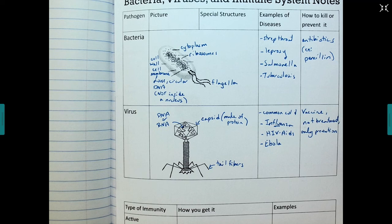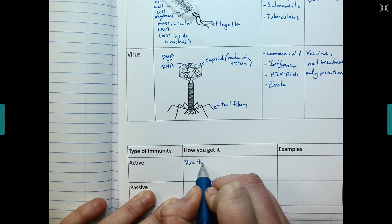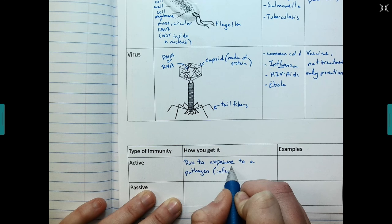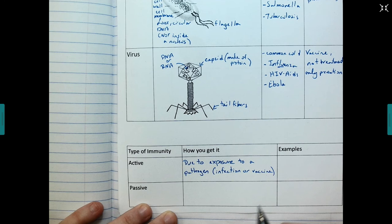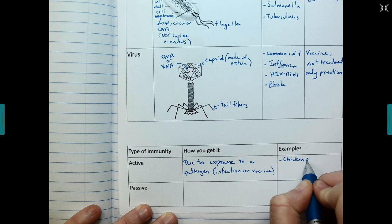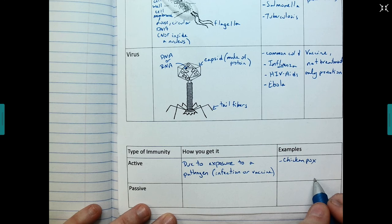So down here at the bottom, there are two types of immunity. So active immunity, you get this type of immunity due to exposure to a pathogen. Either you get infected or you get a vaccine. So some examples of active immunity. So if you've ever had the chicken pox, you typically don't get chicken pox again, because you have white blood cells and antibodies left over from the first infection.